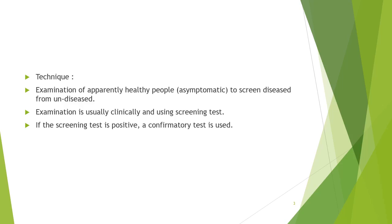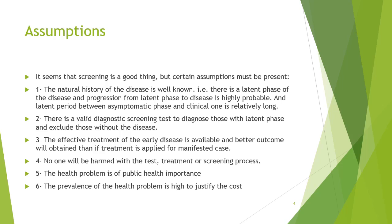How we do screening: by examination of apparently healthy, asymptomatic people to distinguish diseased from undiseased. The term asymptomatic is very important — people with no symptoms are screened, using clinical examination and diagnostic screening tests. If the screening test comes back positive, we need another confirmatory test to prove the diagnosis. But there are some assumptions to be taken into consideration for screening programs.